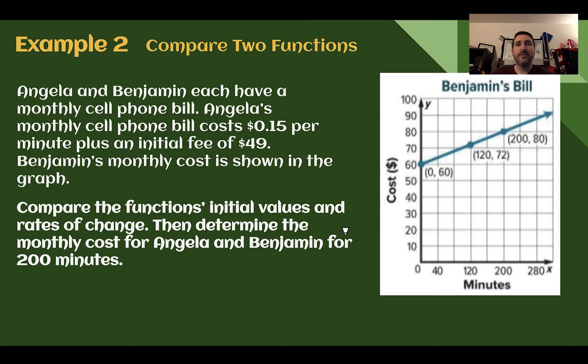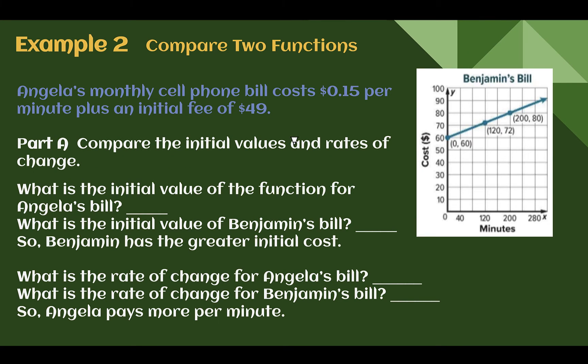Example 2, compare two functions. Angela and Benjamin each have a monthly cell phone bill. Angela's monthly cell phone bill costs $0.15 per minute plus an initial fee of $49.00. Benjamin's monthly cost is shown in the graph. Compare the function's initial values and rates of change, then determine the monthly cost for Angela and Benjamin for 200 minutes.